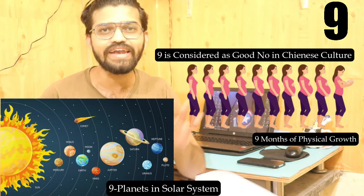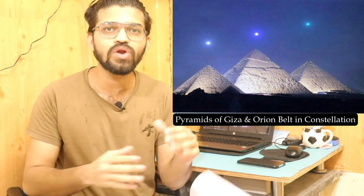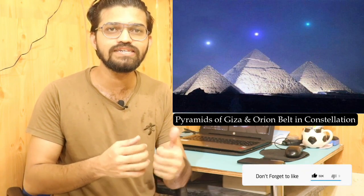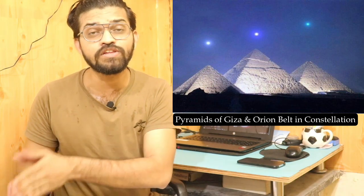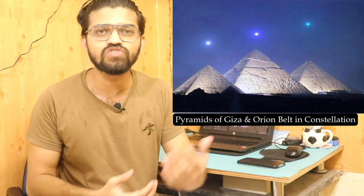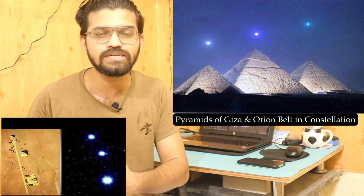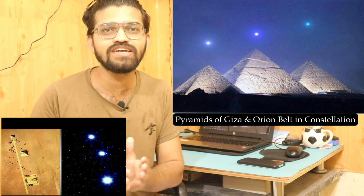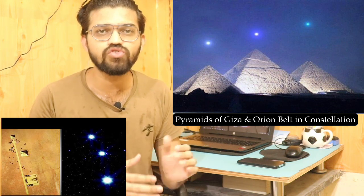Looking at the famous theory correlating the Pyramids of Giza with the Orion Belt constellation: the number of pyramids at Giza is three, and these pyramids point straight toward the Orion Belt, which also has three stars. We can say there is a divine energy flowing between the Pyramids of Giza and the stars of the Orion Belt, and that nature itself also follows the rule of 369.